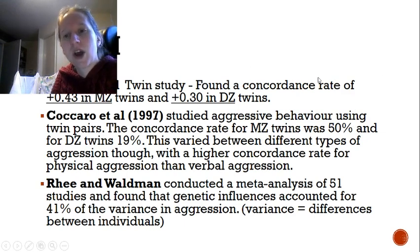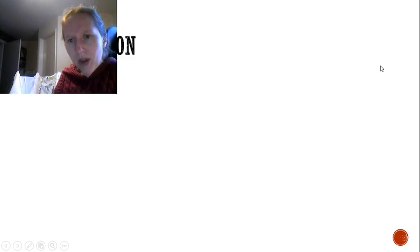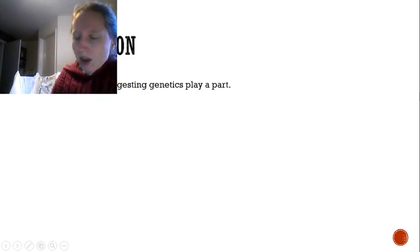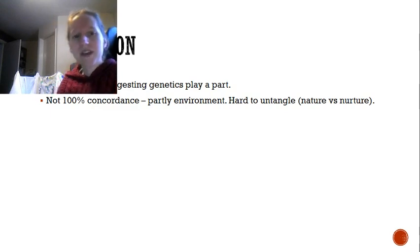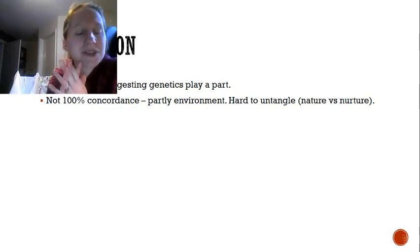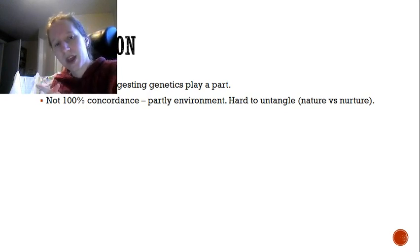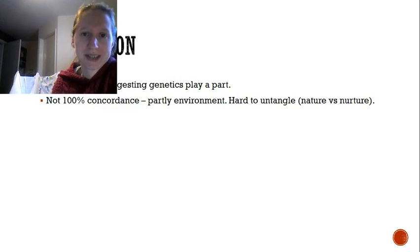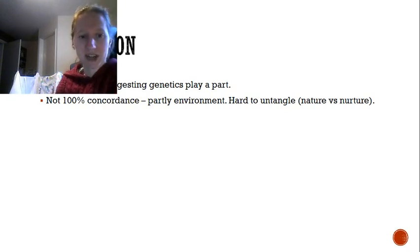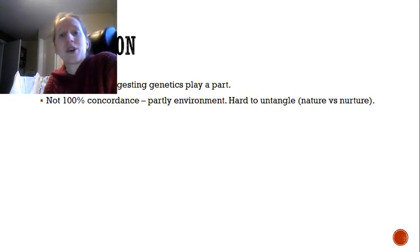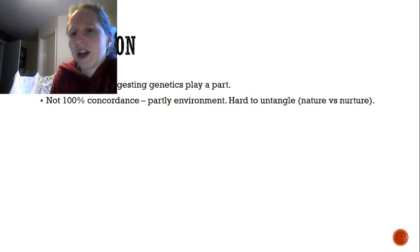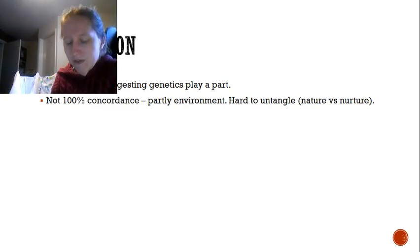Those are three fairly compelling studies suggesting genetics plays a part. However, we don't have 100% concordance rates. If a behavior were entirely genetic, we would expect 100% concordance in people with identical DNA — i.e., identical twins. The fact that we're finding rates as low as 50%, significantly lower than 100%, suggests it's not just genetics. We know environment is at least partly playing a part in aggressive behavior developing.